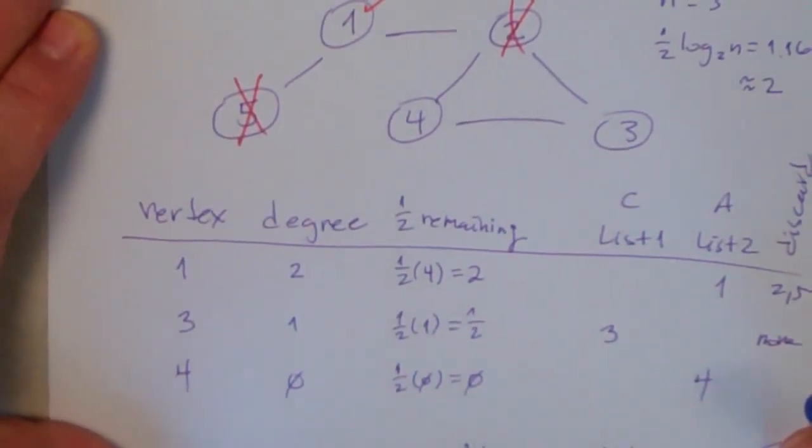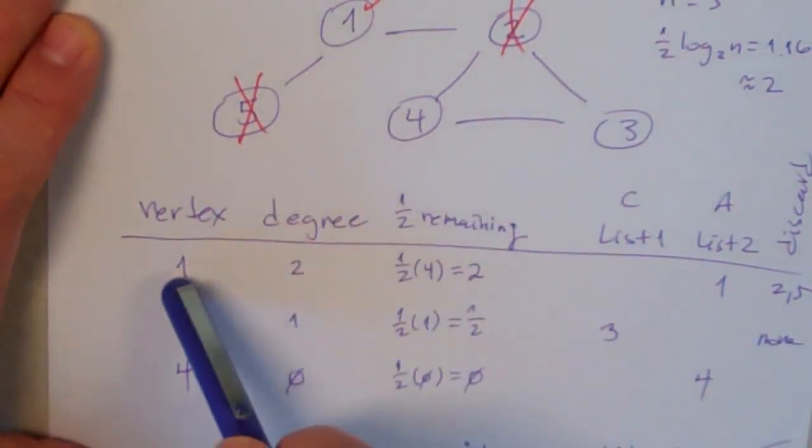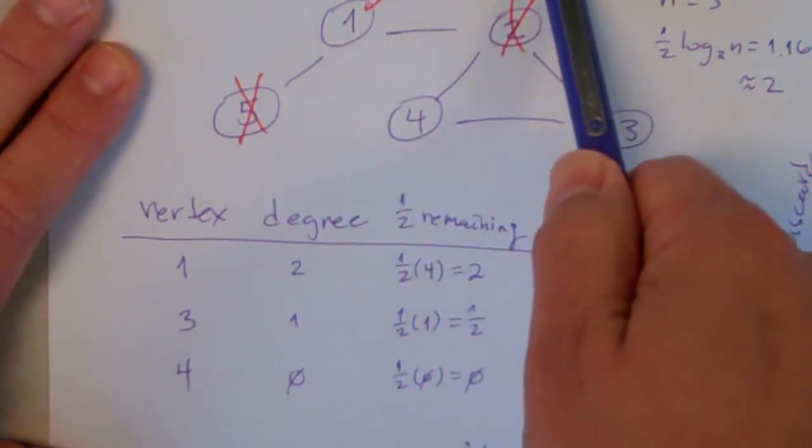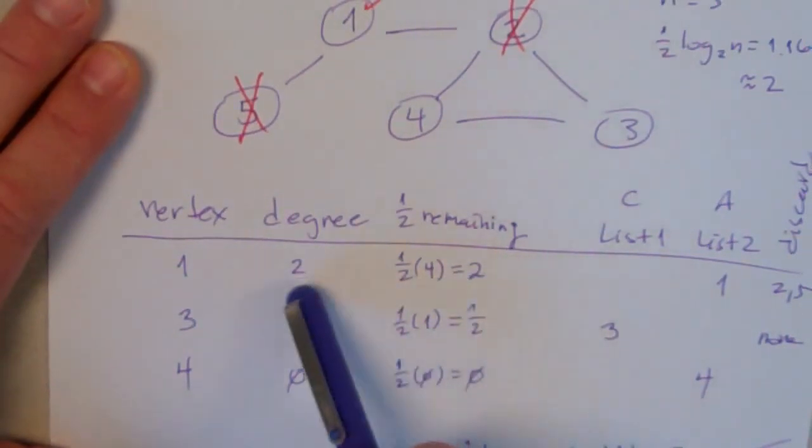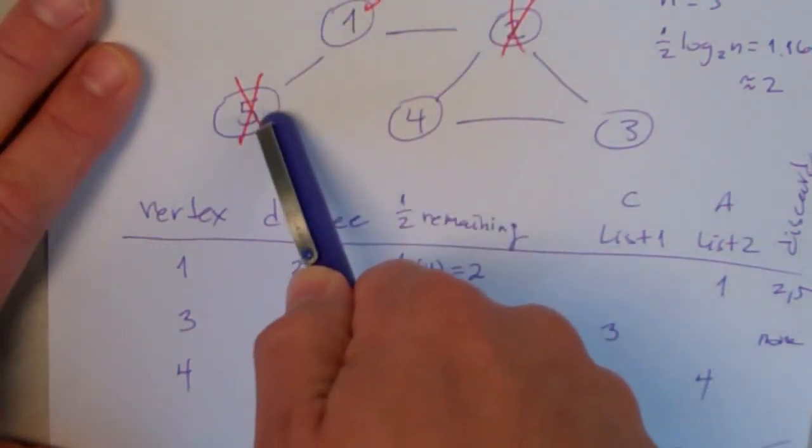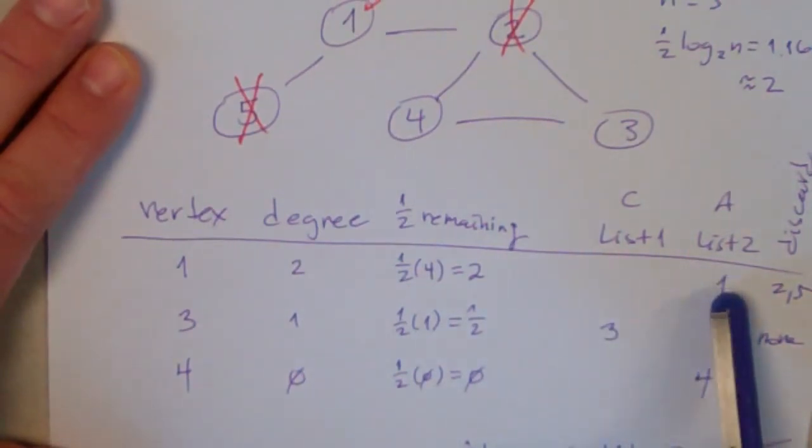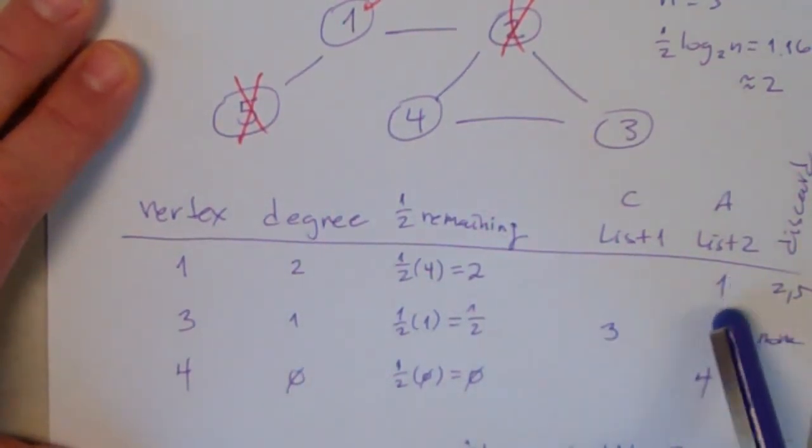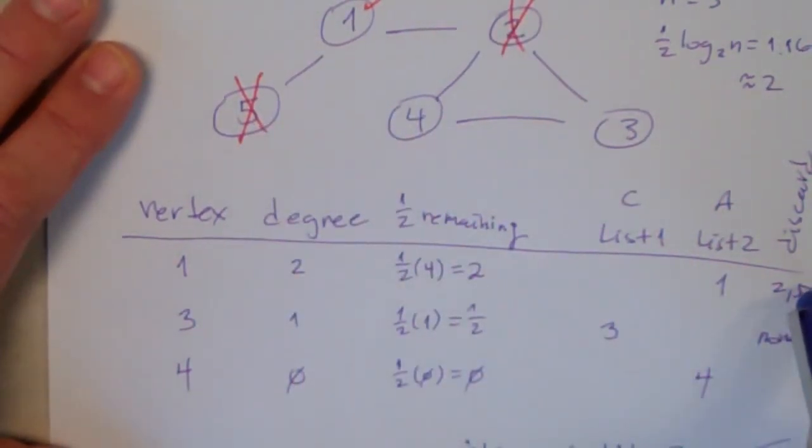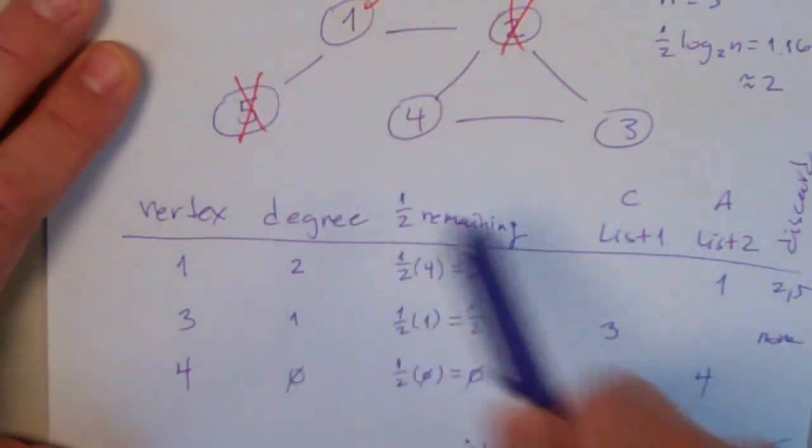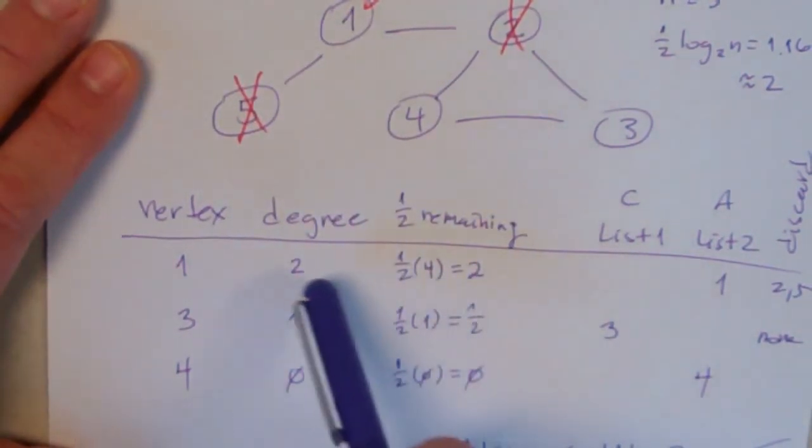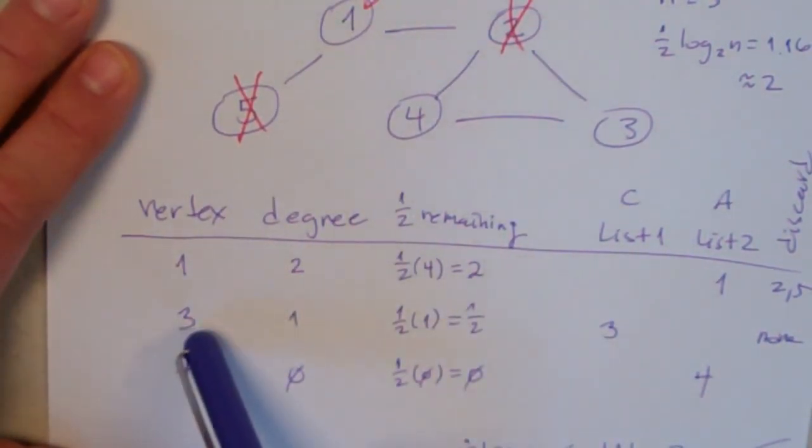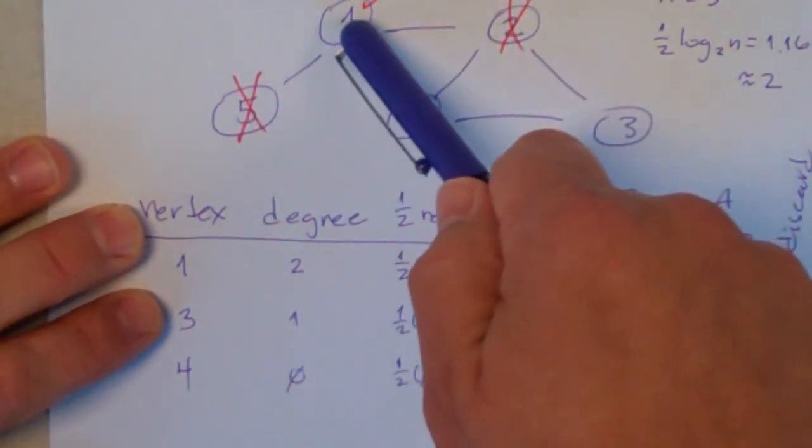If we go to vertex 1 and we pick that one, and we look at the rest of the remaining nodes, how many are there? There's 4 left. So 1/2 of 4 is 2. The degree of 1 is 2. So we add it to list 2, the anti-clique, not the clique. And then we discard nodes 2 and 5, because they are connected to 1. And the degree of 1 is 2, but it's not greater than 2. It has to be greater than 2.